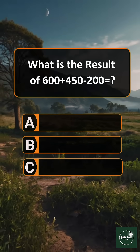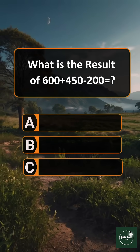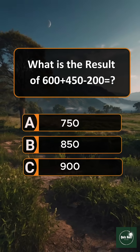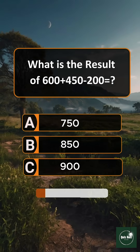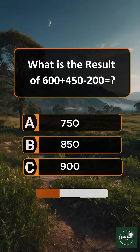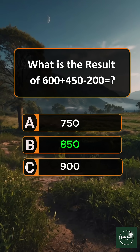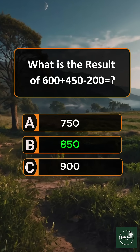Question 3. What is the result of 600 plus 450 minus 200? Answer B: 850.